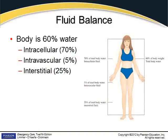Fluid balance is huge in the human body. We have certain amounts of fluids that have to be in certain places in order for things to function appropriately. The body is at least 60% water, and of that 60% water, 70% is intracellular, 5% intravascular, and 25% is interstitial.